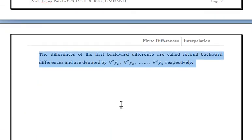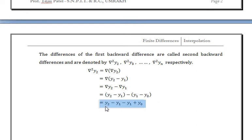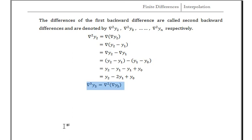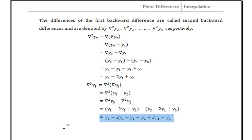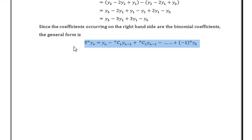For higher order, ∇²y2 = ∇(∇y2), and since ∇y2 = y2 - y1, we have ∇y2 - ∇y1, which gives y2 - 2y1 + y0. Similarly, ∇³y3 = y3 - 3y2 + 3y1 - y0. The general form is ∇ⁿyn = yn - nC1·yn-1 + nC2·yn-2 - ... + (-1)ⁿy0.